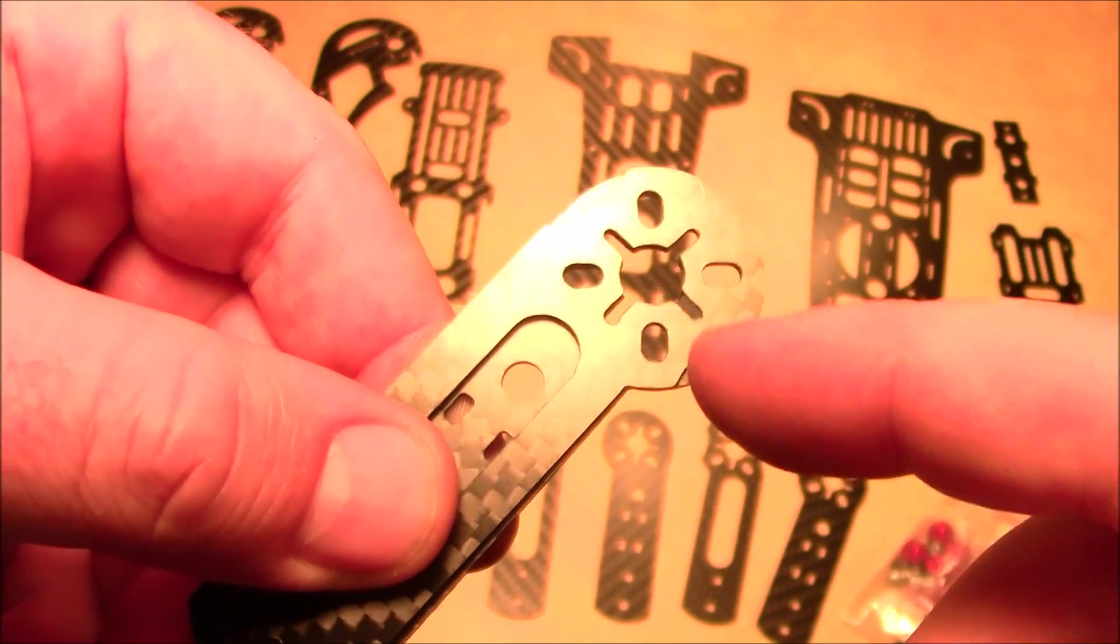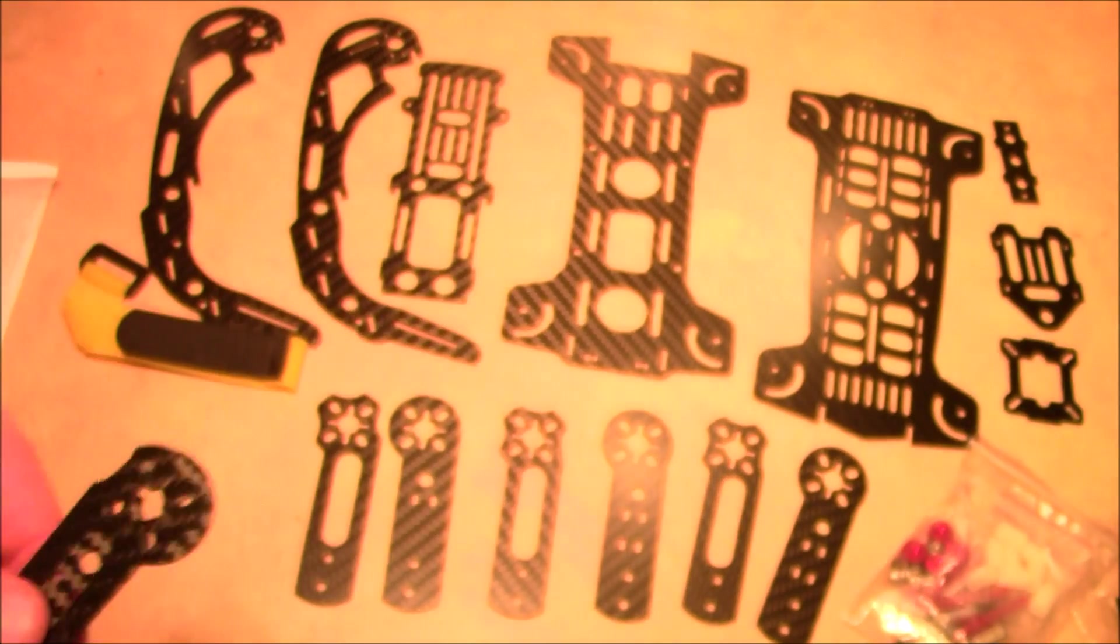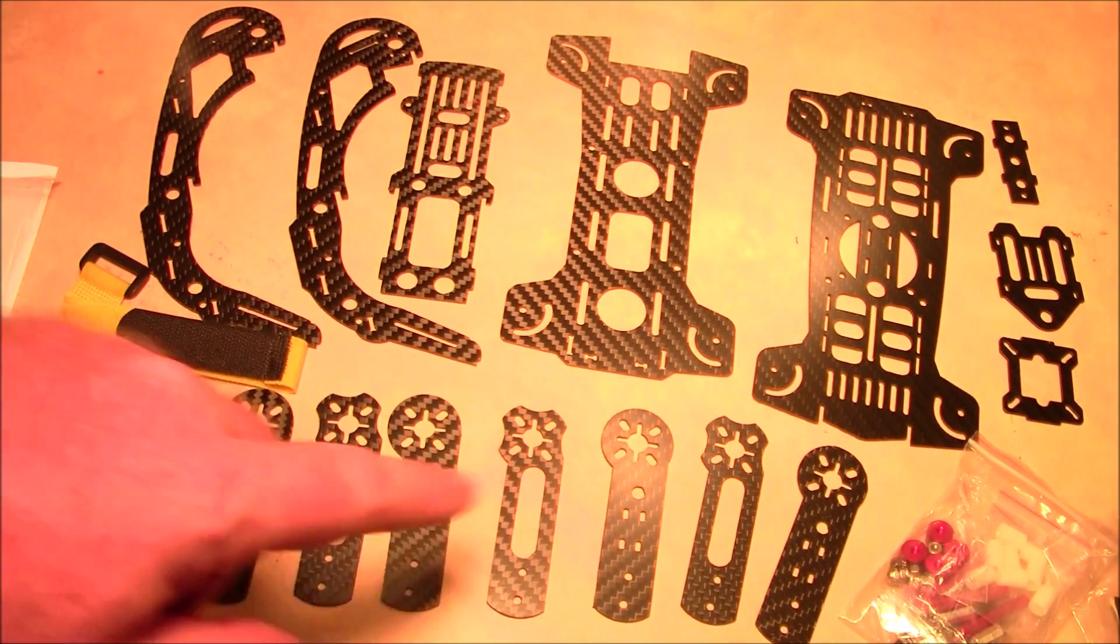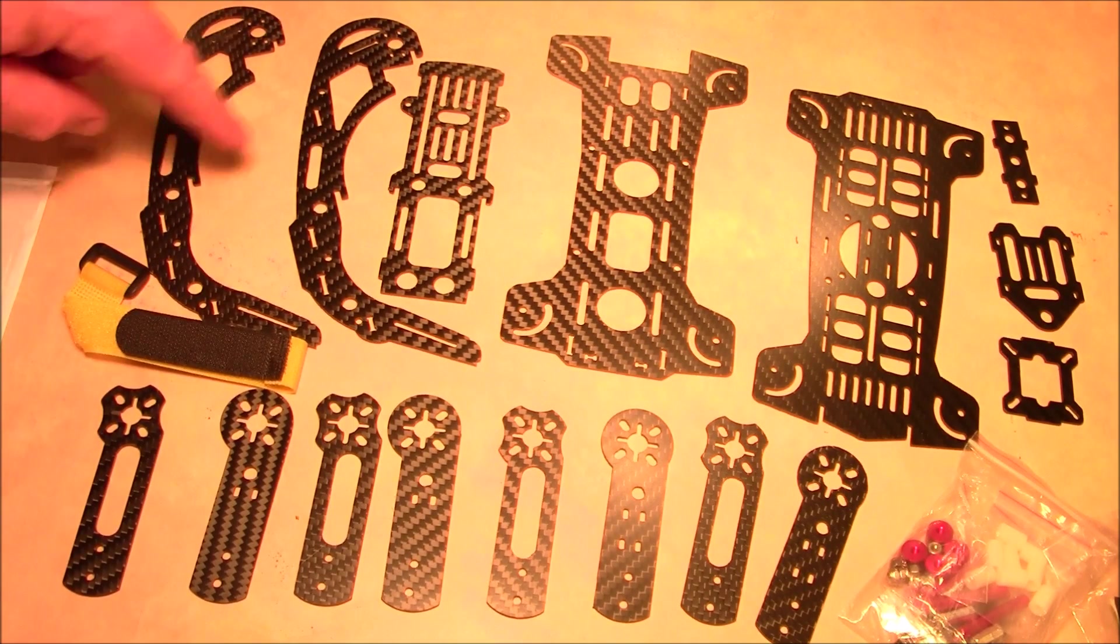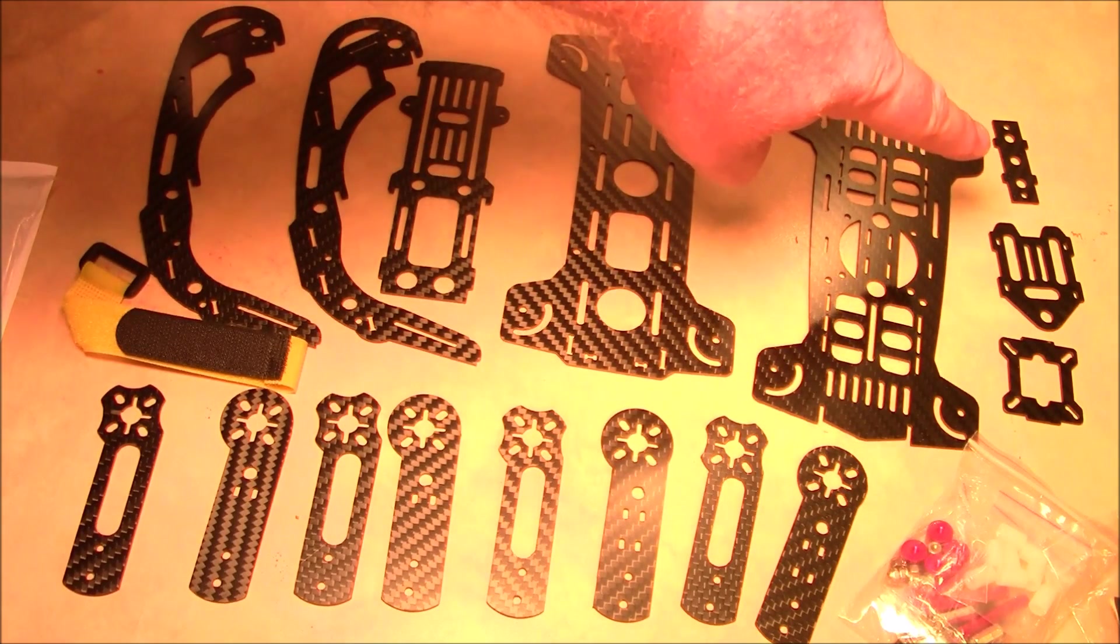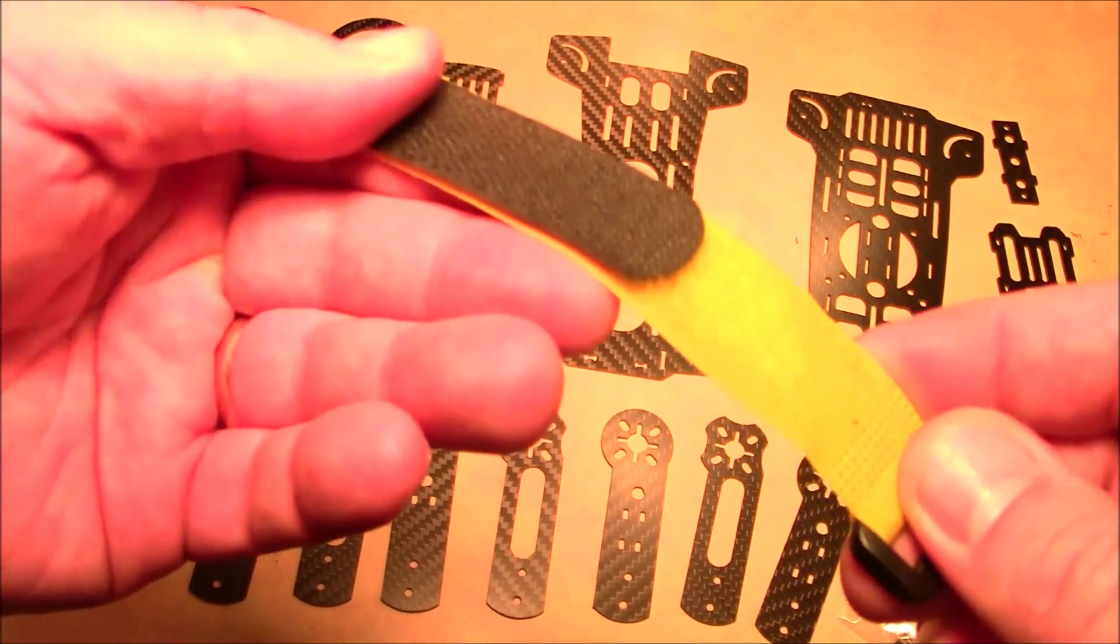It came with all these little arm pieces down at the bottom, and these are the plates that go over the top to protect it. Then it has the camera mount over here, and this would be a Mobius mount, and that's probably some piece to help hold stuff together.